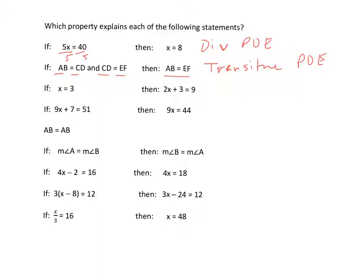If x equals 3, then 2x plus 3 equals 9. So basically we're subbing in. Instead of x, we're putting 3 in there. So it's 2 times 3 plus 3. So that's the substitution property.